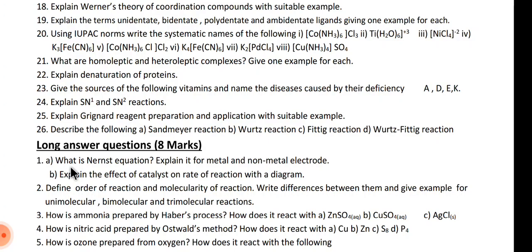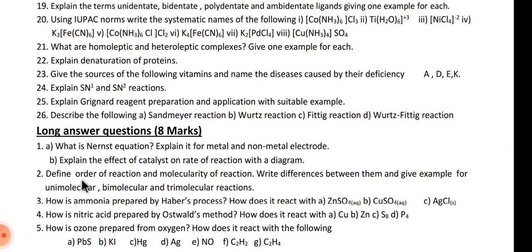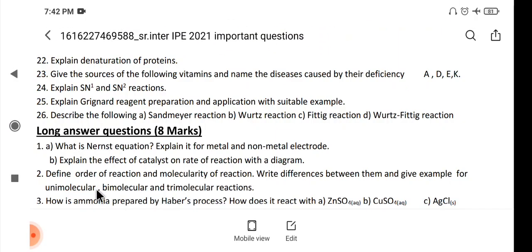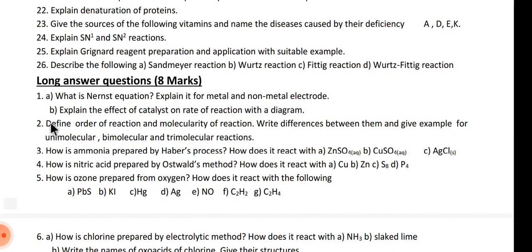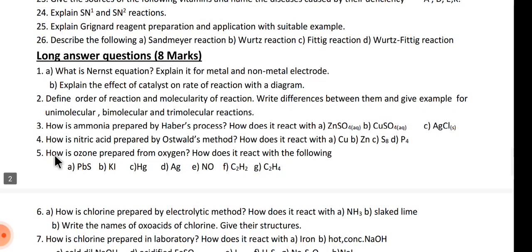Nernst equation. Second one, effect of catalyst on the rate of reaction. Second question is order of reaction and molecularity, and how is ammonia prepared by Haber's process, and how is nitric acid prepared by Ostwald's process. So 3 and 4 - 15th group elements. First one, Nernst equation and catalytic effect - electrochemistry and chemical kinetics. The second one - chemical kinetics and electrochemistry mix.